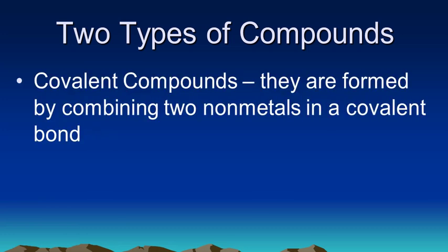The first type will be called covalent compounds. Sometimes they're called molecular compounds, and these are formed by combining two nonmetals in a covalent bond.